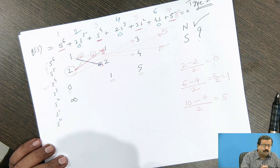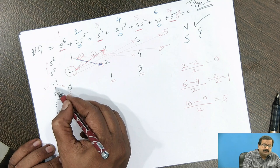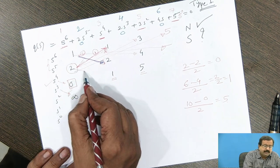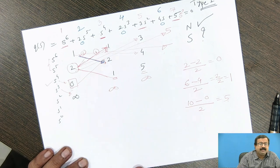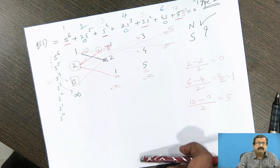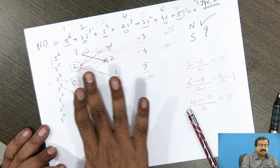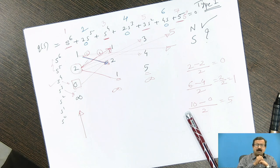Now I want to compute the fourth row using the second and third rows, where the third row is [0, 1, 5]. But the pivot element here is 0. So the calculation becomes (0×2 − 2×1)/0, which gives infinity. Every element of the fourth row will be infinity, and we cannot complete the Routh's table. Whenever a zero appears in the first column of the Routh's table, the table fails.